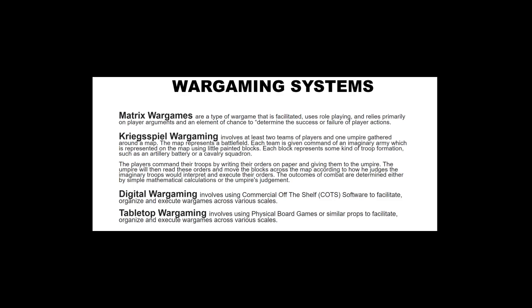Digital wargaming and tabletop wargaming are systems as well as methods. Digital wargaming uses commercial off-the-shelf software to facilitate, organize, and execute games across various scales. Commercial off-the-shelf refers to any public-facing video game you can just buy — it's not a professional software requiring a company to sponsor you for a license. If you can launch the internet and buy the game, it's considered a COTS wargame. Tabletop wargaming is the same concept but using physical props and dice rolls for your rule sets.